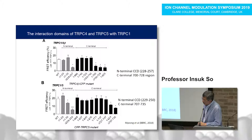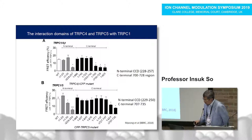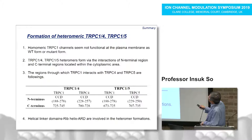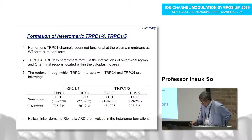We also scanned the domains of TRPC4 and TRPC5 that interact with TRPC1. The N-terminal coiled-coil domain of TRPC4 and the C-terminal CIRB domain are responsible for heteromeric formation between TRPC1 and TRPC4. In case of TRPC1/5 heteromeric formation, the N-terminal coiled-coil domain and the C-terminal CIRB domain are also very important. Based on recent cryo-EM data, the helical linker domain, rib helix, and ankryin-like domains are involved in heteromeric formation between TRPC1/4 or TRPC1/5.